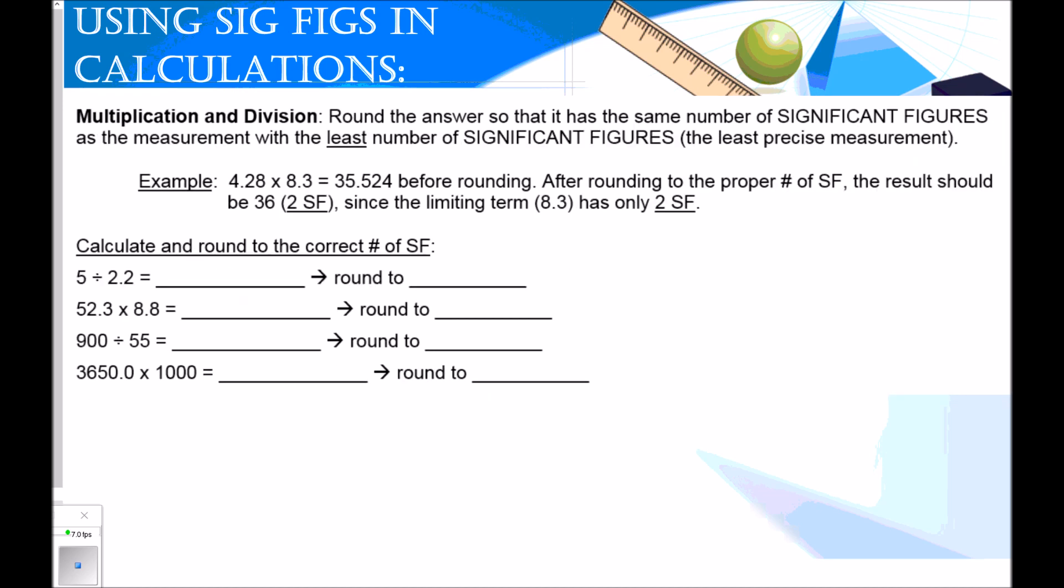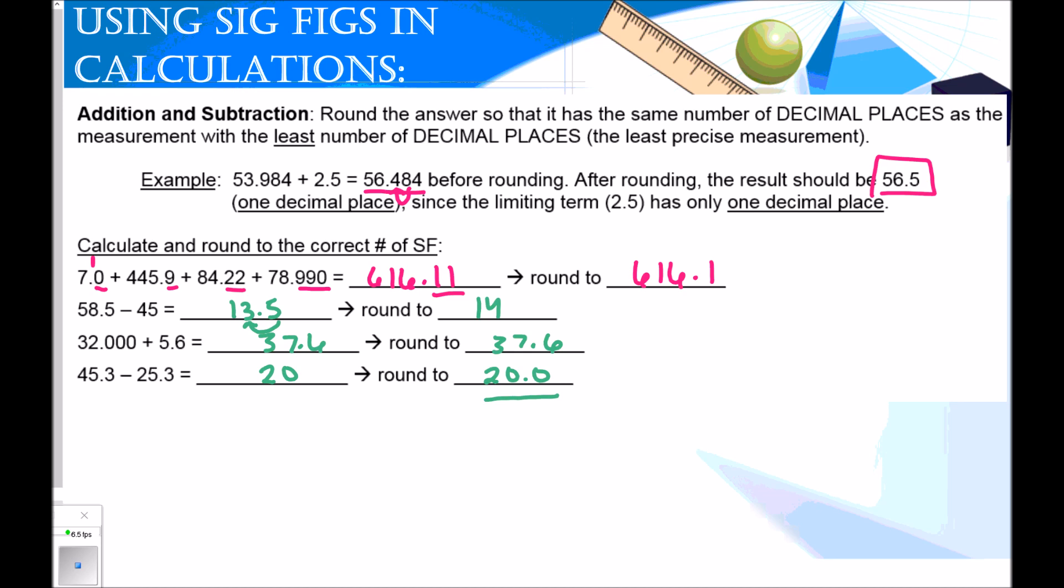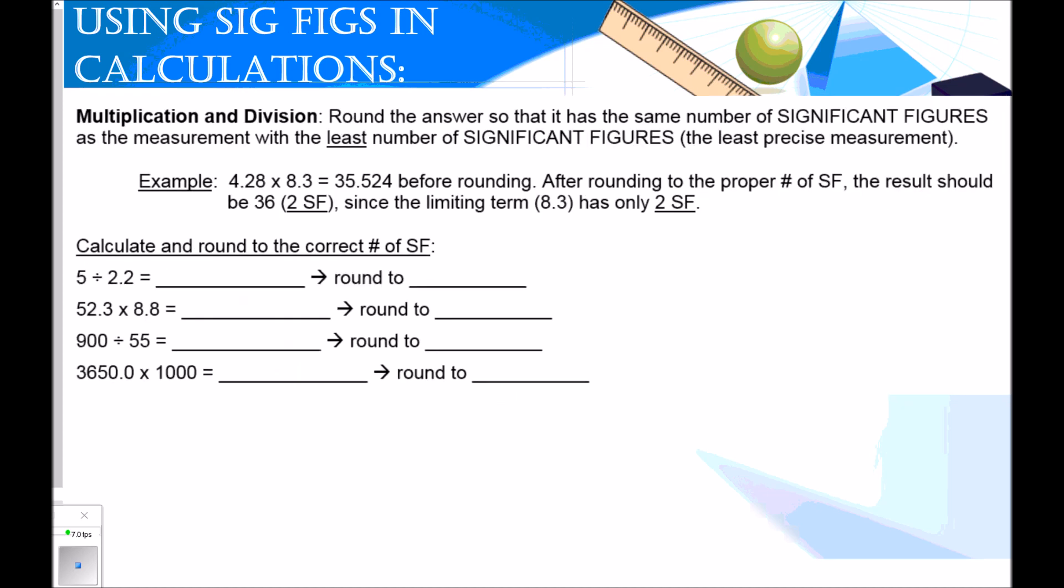Just to mess your life up, whenever you're doing multiplication and division, the rules are completely different. When you're doing addition and subtraction, you look at decimal places. When you do multiplication and division, you will get something completely different. When you're doing multiplication and division, you round the answer so that it has the same number of significant figures as the measurement with the least number of significant figures. This time we're looking at the entire number for significant figures.